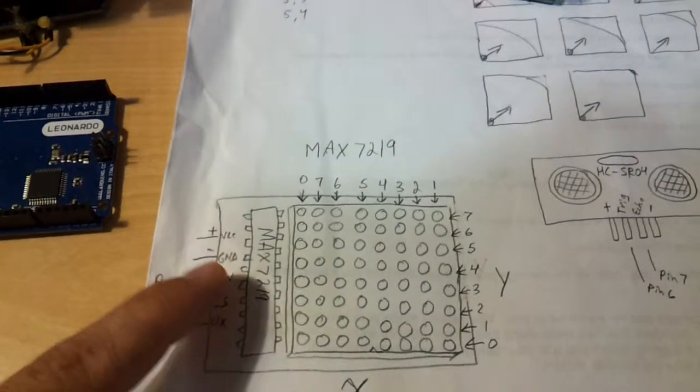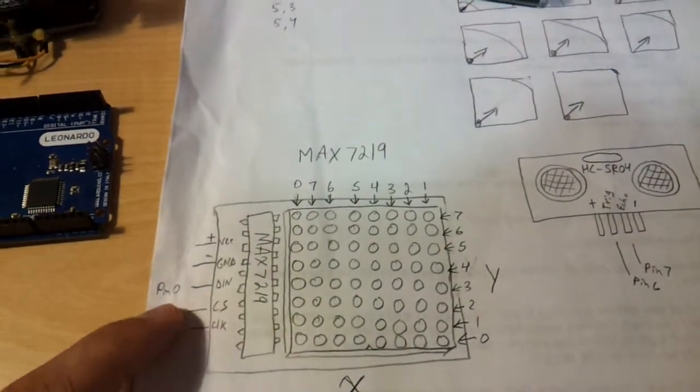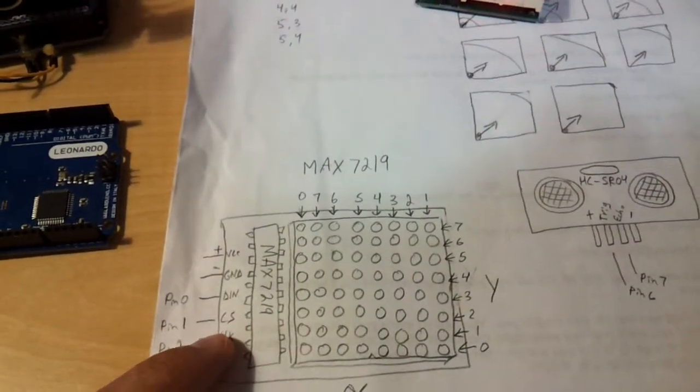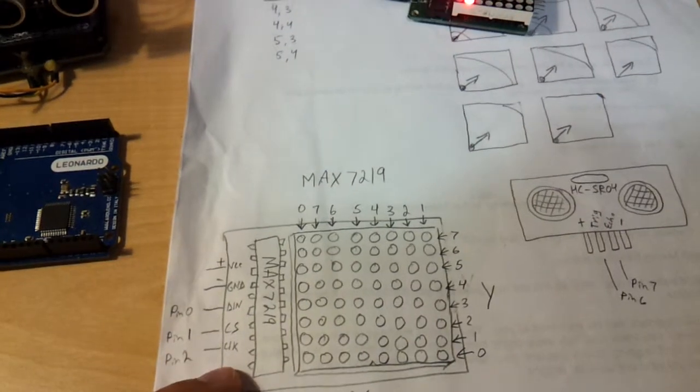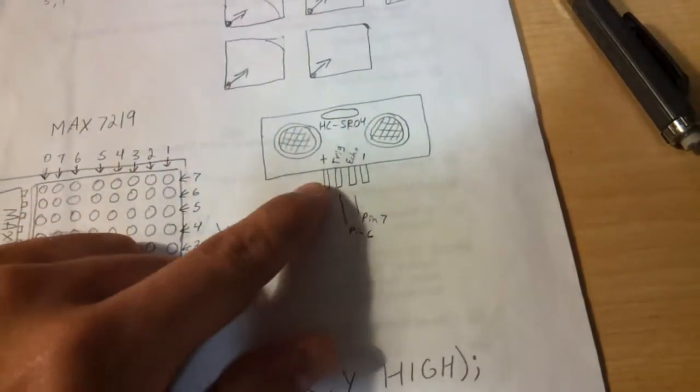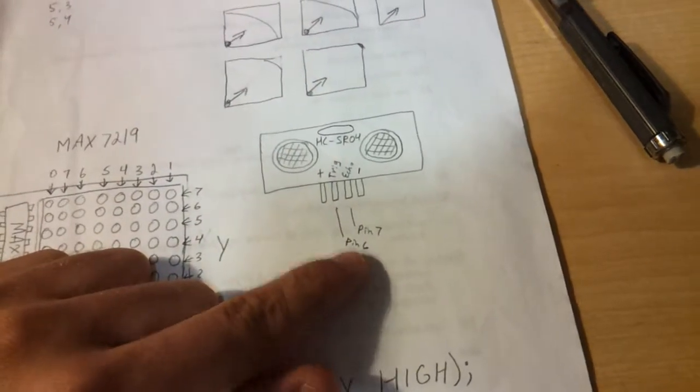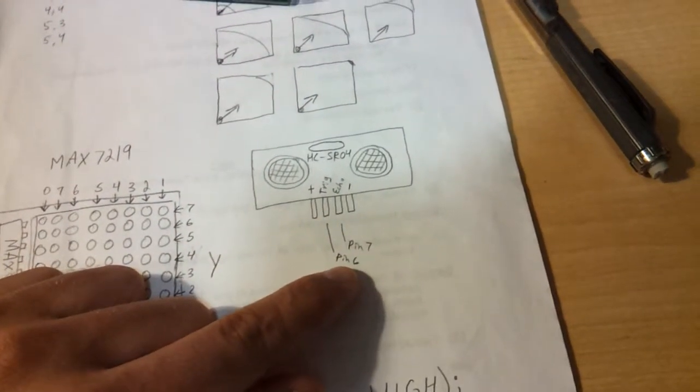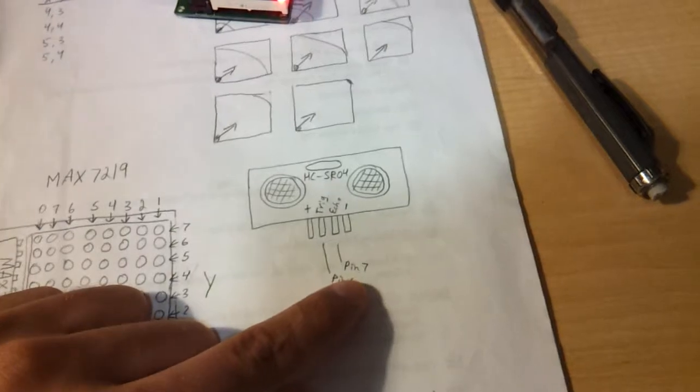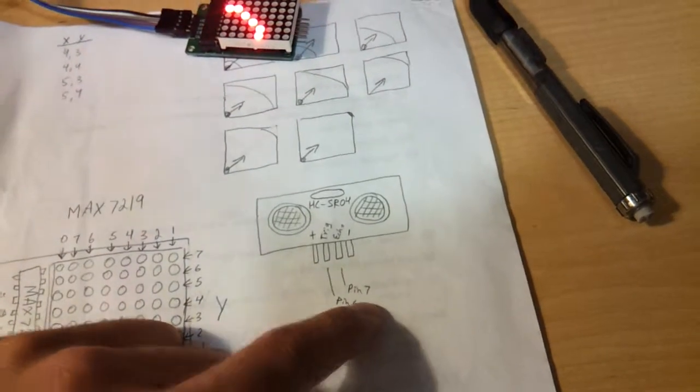You plug them in: positive, negative, data to pin zero, load to pin one, and clock to pin two. For the ultrasonic sensor, you have positive, trigger in pin six, and echo pin in pin seven.